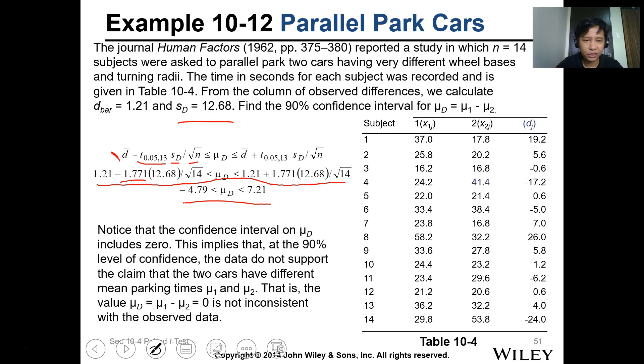Notice that the confidence interval on mu d includes 0. This implies that at the 90% confidence level, the data do not support the claim that the two cars have different mean parking times, mu 1 and mu 2. That is, the value mu d equals mu 1 minus mu 2 equals 0 is not inconsistent with the observed data. So meaning, you cannot claim that the two cars have different mean parking times. Because the interval includes 0.